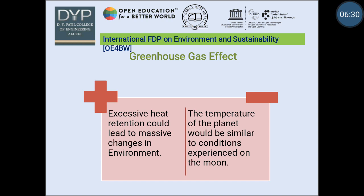What is the negative side — if there are no greenhouse gases at all, what will happen? The temperature of the planet would be similar to the conditions experienced on the moon: the surface can reach 134 degrees Celsius during the day and minus 153 degrees Celsius at night. So there are two sides of the greenhouse gas effect.